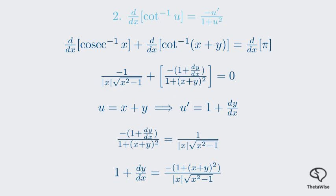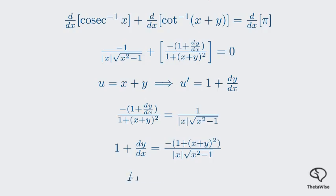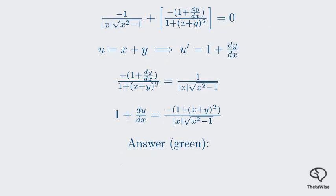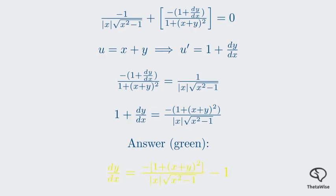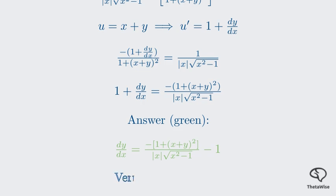Finally, we subtract 1 from both sides to get our final expression for dy/dx. The result is dy/dx equals negative 1 plus xy squared, divided by the absolute value of x times the square root of x squared minus 1, all minus 1. The memo's answer is identical, which means our calculation is correct and verified.